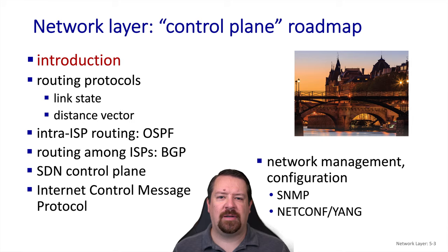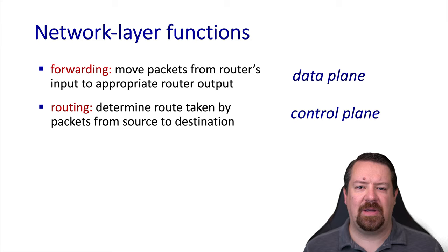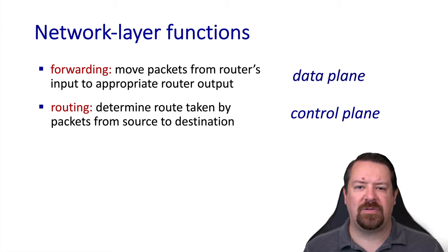Let's start with the introduction and a little review about what differentiates the control plane from the data plane. We spent the last several videos talking about Chapter 4, which covered the data plane of the IP layer. The data plane's job is to move packets from the input port of a router to the output port, making the correct forwarding decision along the way. The control plane looks at the big-picture path of how the packets are going to get from a source to a destination, and it provides information to the data plane so that it can make the correct forwarding decisions.